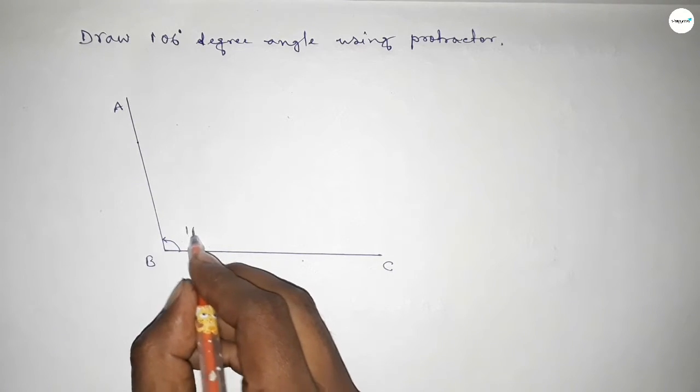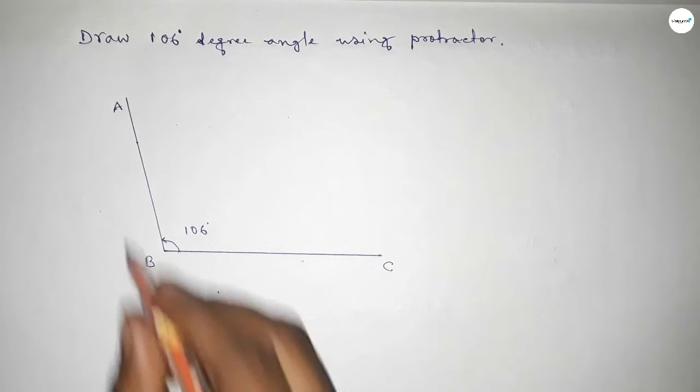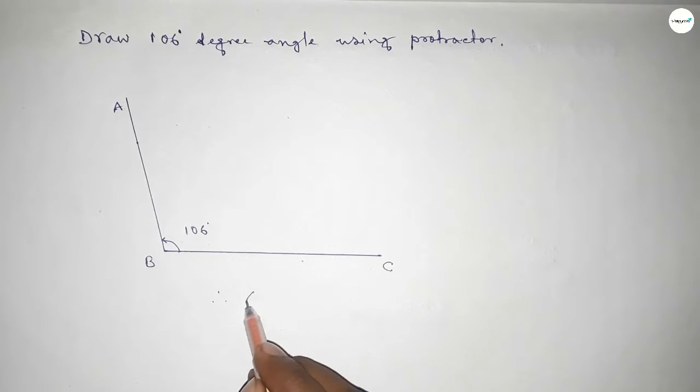This is the 106-degree angle. Therefore, angle ABC equals 106 degrees.